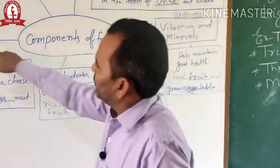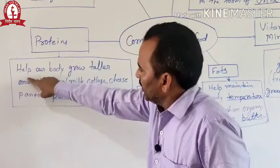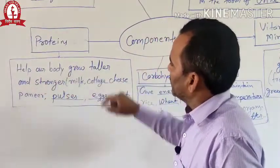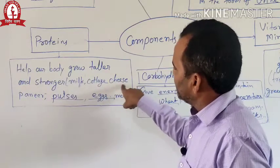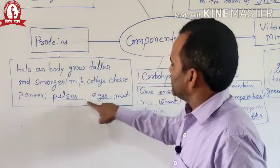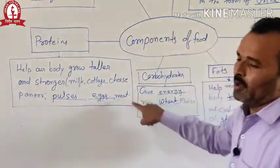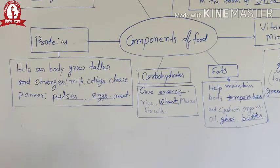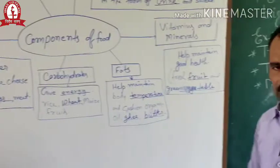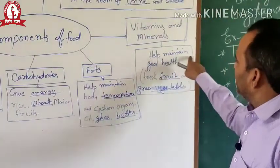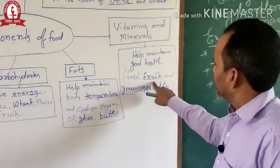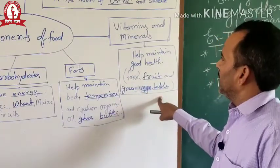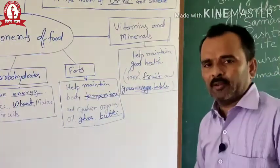Proteins help our body grow taller and stronger. Milk, cottage cheese, paneer, pulses, eggs, and meat are the examples of protein. After that, vitamins and minerals help maintain good health. Fresh fruits and green vegetables are the source of vitamins and minerals.